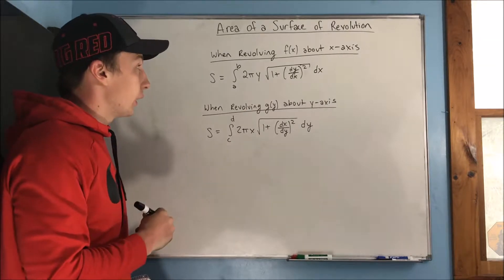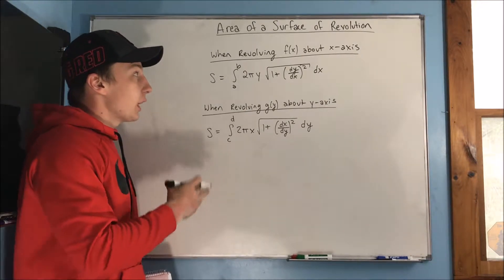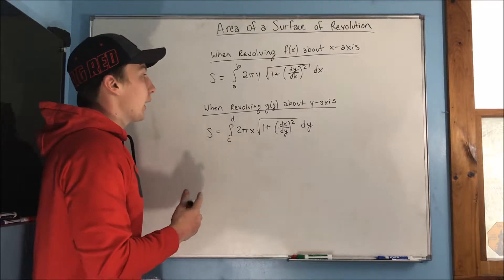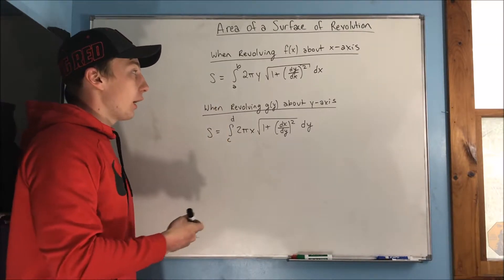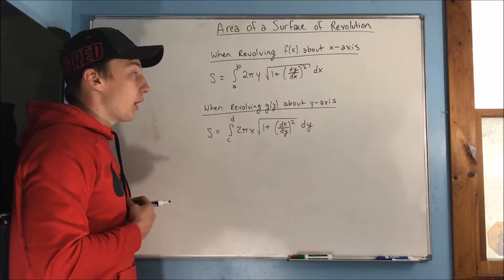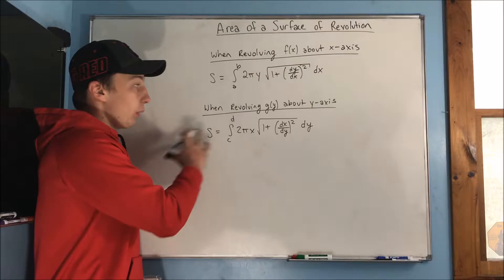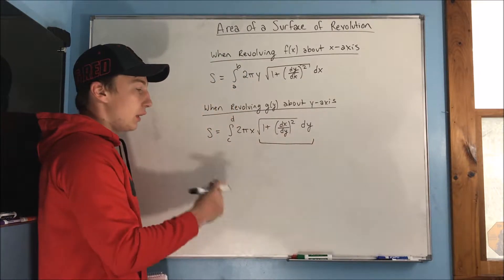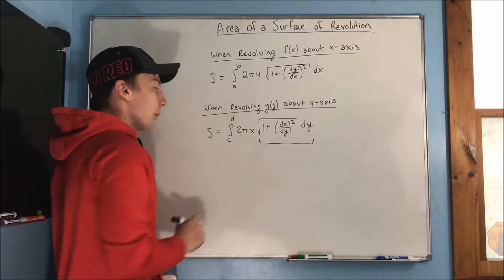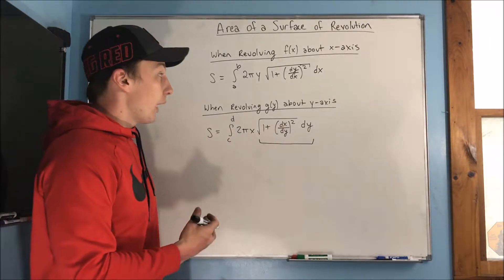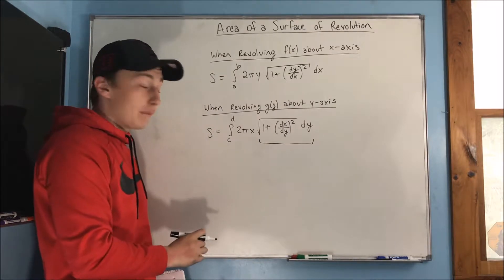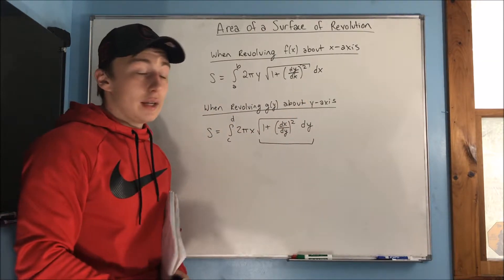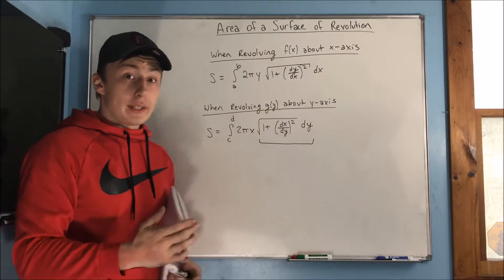Here are our two surface area equations. You get different equations when revolving around different axes. If you're revolving around the x-axis, the surface area is the integral from a to b of 2πy times the square root of 1 plus (dy/dx)² dx. When revolving around the y-axis, you put 2πx in front of the arc length equation. So essentially, 2πy goes in front for the x-axis, and 2πx goes in front for the y-axis.